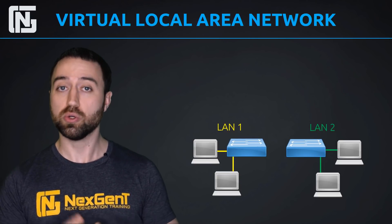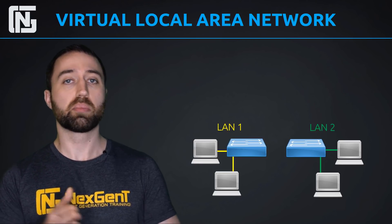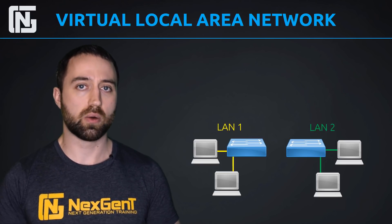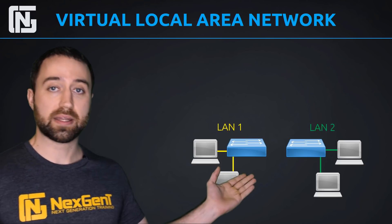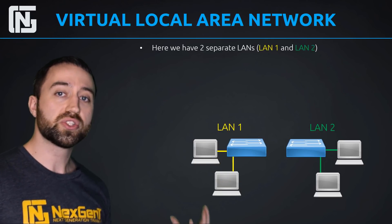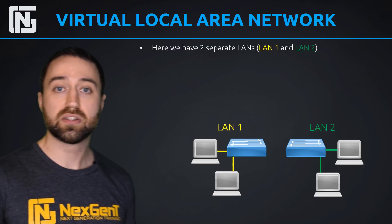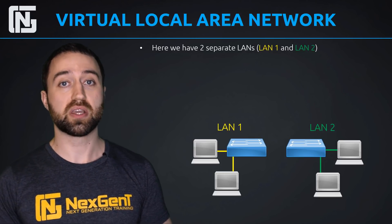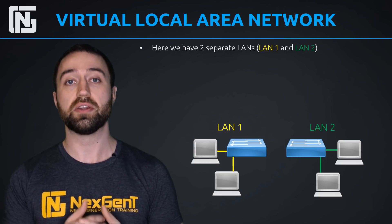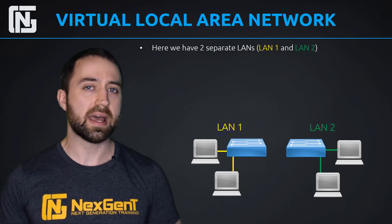Before we can understand VLANs, we need to understand the pre-VLAN era. Before VLANs, we would create separate networks like LAN 1 and LAN 2. The point here is we have two physically separate switches, so the hosts connected to LAN 1 cannot communicate with the hosts on LAN 2 — because there's no connection between these two switches. They're physically separated on different networks.